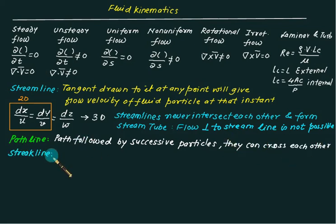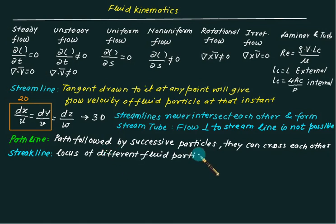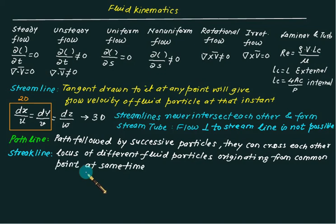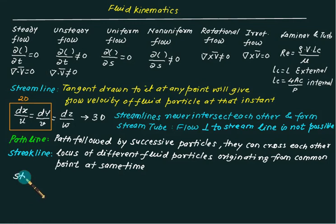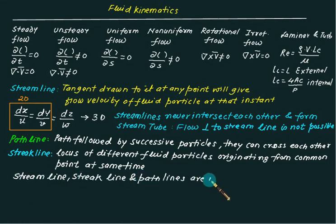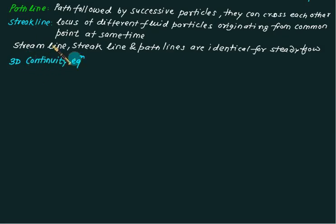A streak line is defined as the locus of different fluid particles that originated from a common point at the same time. For steady flow only, the path line, streamline, and streak line are identical.